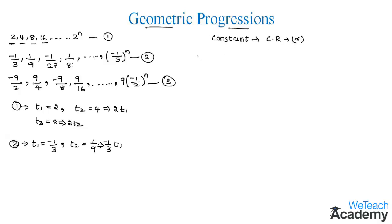So let us say if first term is a and the common ratio is r then the series takes the form of a comma ar comma ar square and so on where the value of a is not equal to 0.